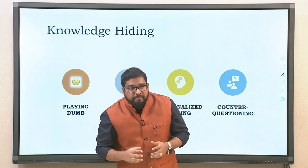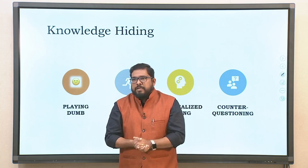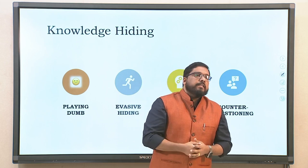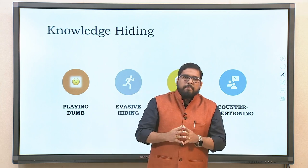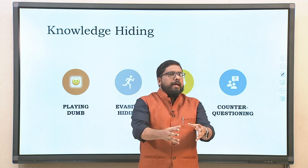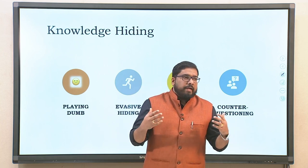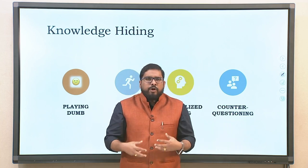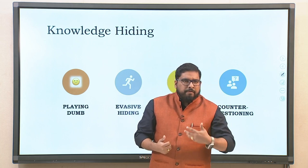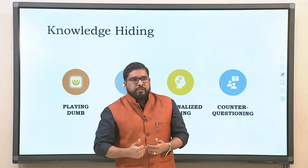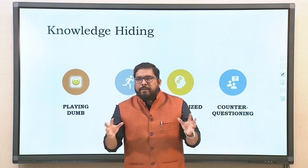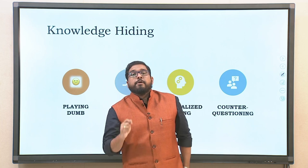The second strategy is evasive hiding — the moment you ask something, they just vanish, they just evade. The third strategy is rationalized hiding: they might say 'the manager has strictly instructed that I should not disclose anything at this point in time.' For example, you might not get detailed plans for the next rocket launch from ISRO, or atomic secrets pertaining to national security — all these pertain to rationalized hiding.